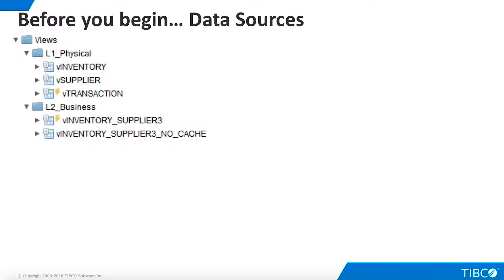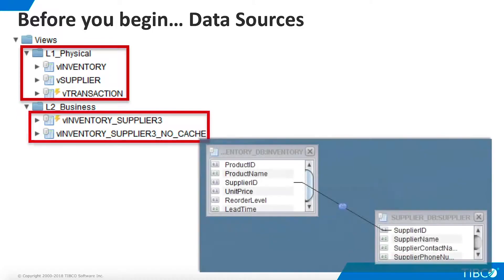The level-two business views join inventory and supplier on the supplier ID column and use all columns from both data sources. These two views are identical except that one is cached and the other is not.